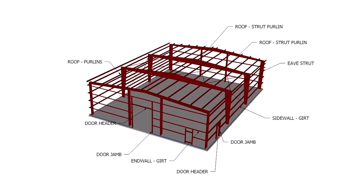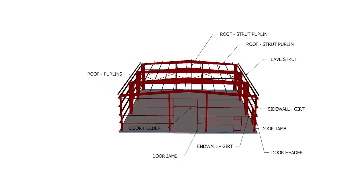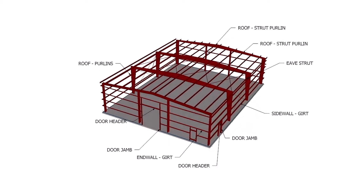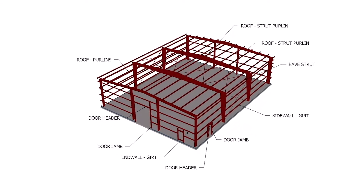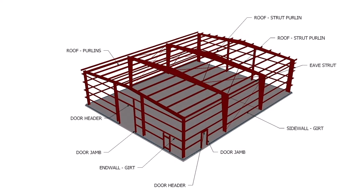Secondary framing members run along the length of the building in the roof and are called purlins. The purlins that align with the anchor points of the X-bracing in the roof are called strut purlins. The purlin along the eave of the building is the eave strut. Purlins can be Z-shaped, cold-formed steel or steel bar joists.